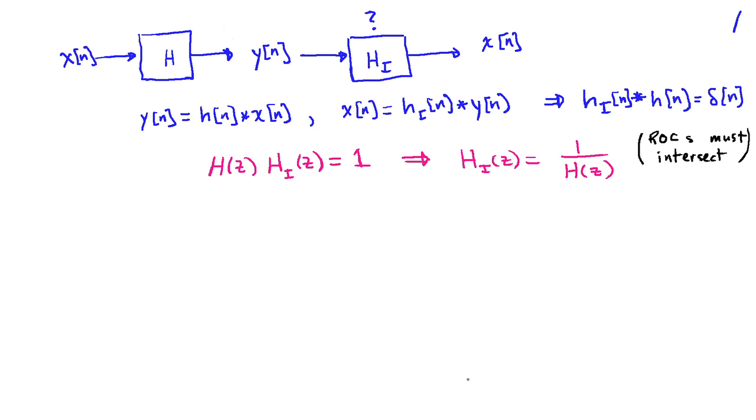Here we have a block diagram showing some signal of interest, X of n, passing through a system H to obtain Y of n. What we'd like to do is undo the distortion that's introduced by H with some other system, H sub i, an inverse system, to recover the original signal X.